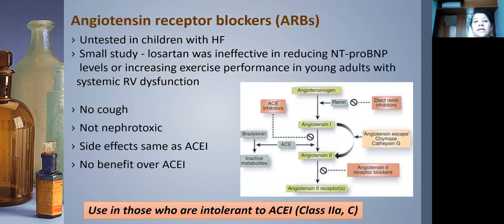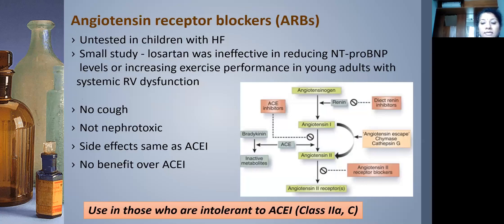Angiotensin receptor blockers (ARBs) are largely untested in children. Many adult studies support their use, but in children there is only a small study where losartan was found to be ineffective in improving exercise performance in systemic RV dysfunction. The advantage of ARBs is once-daily dosing and cough is not a problem. The recommendation for children is to use ARBs in those not tolerating ACE inhibitors — a Class 2A, Level C indication for heart failure.